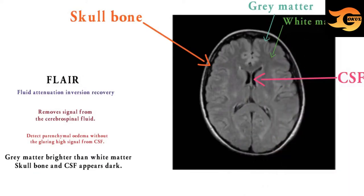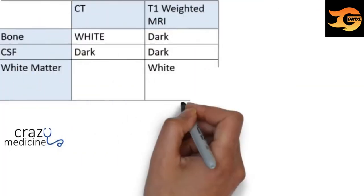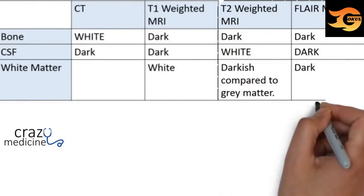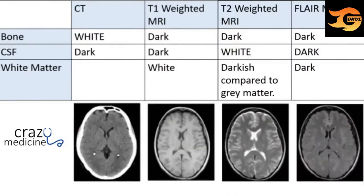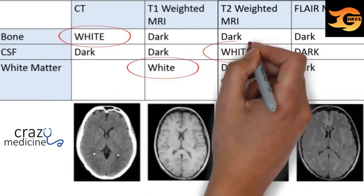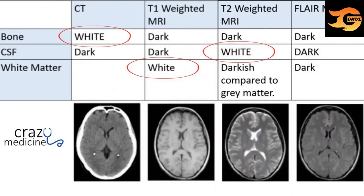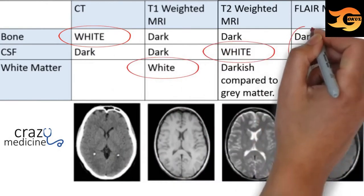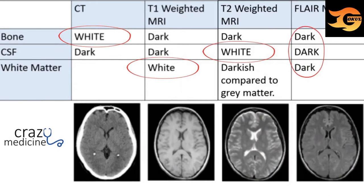I have summarized the whole video in one slide — you can take a screenshot if you want. To remember all this: bone in CT is white, white matter in T1 is white, CSF in T2 is white, and bone, CSF, and white matter — all three — are dark in FLAIR MRI.